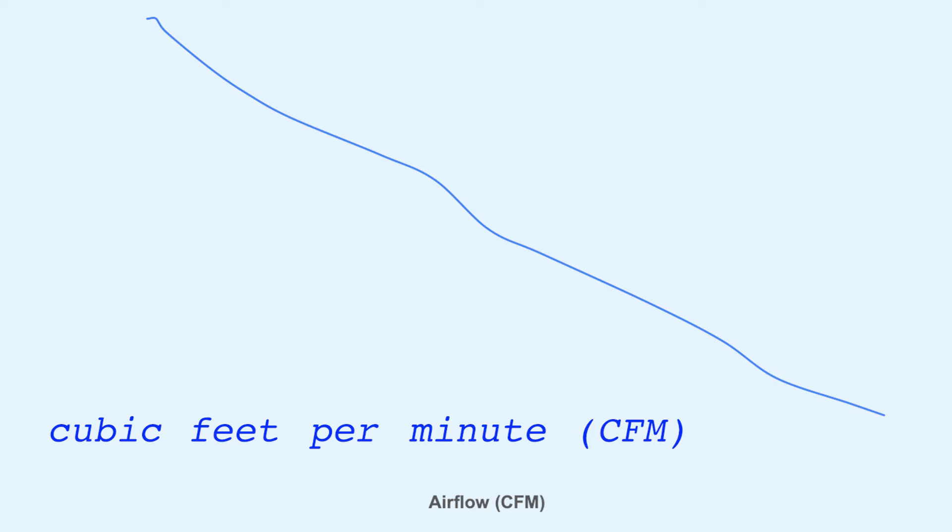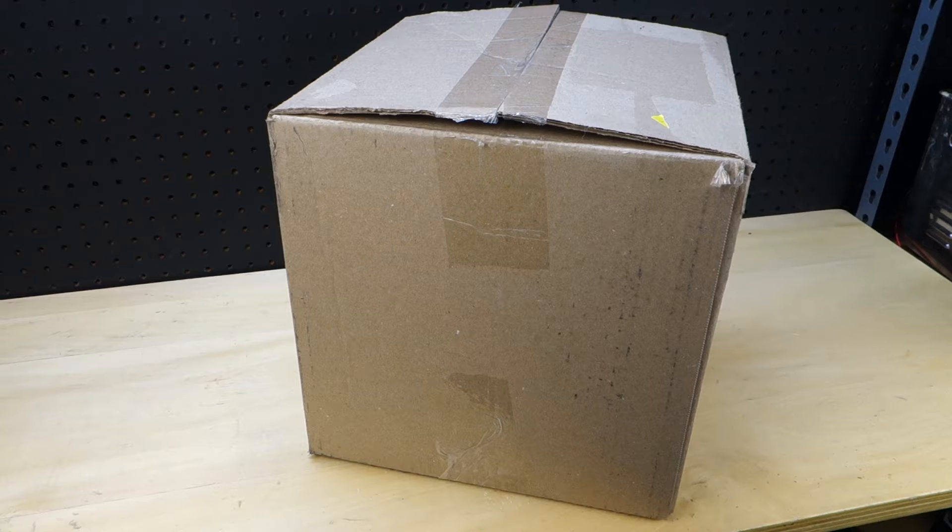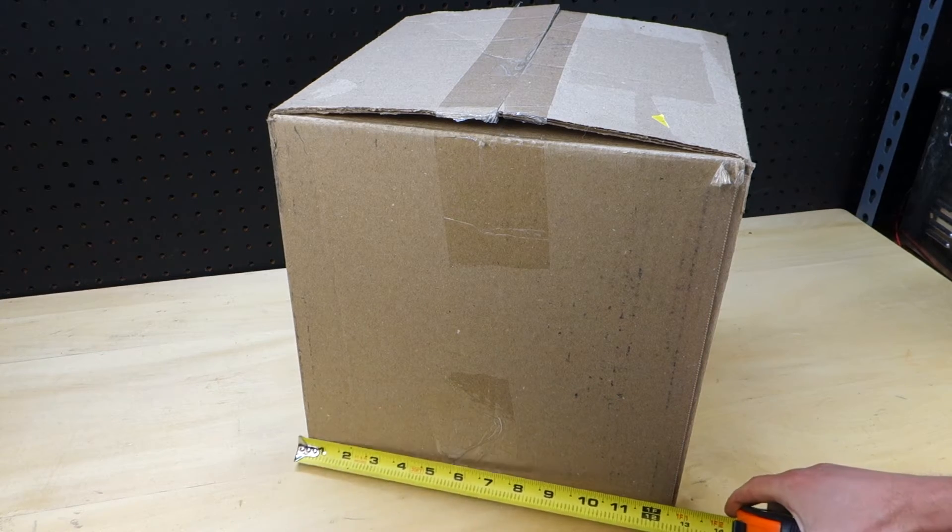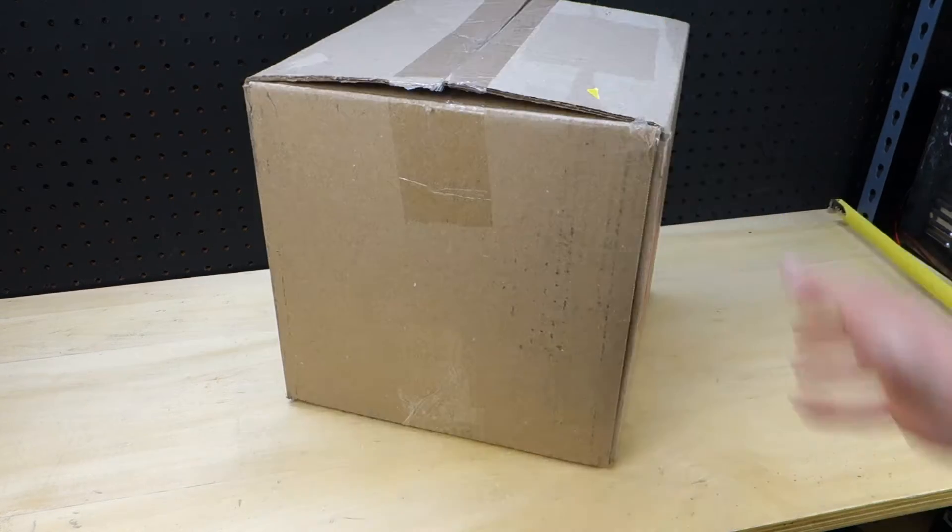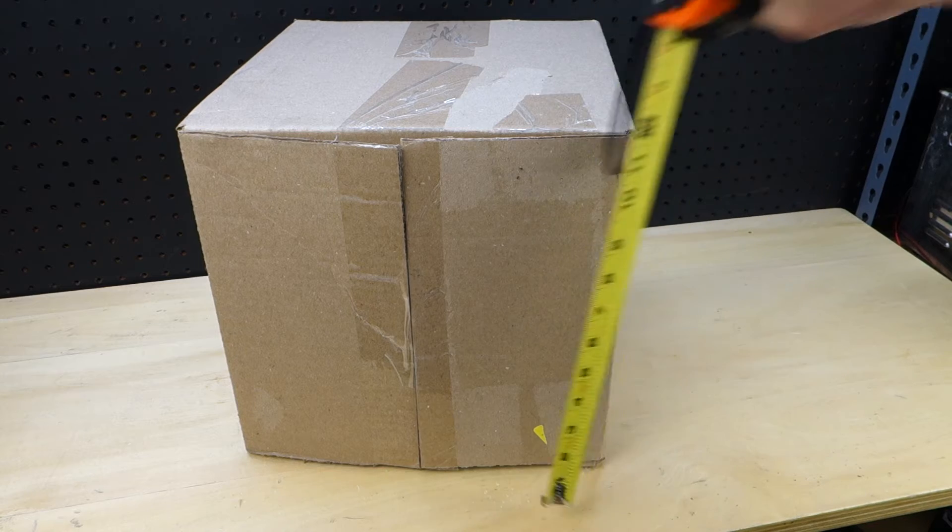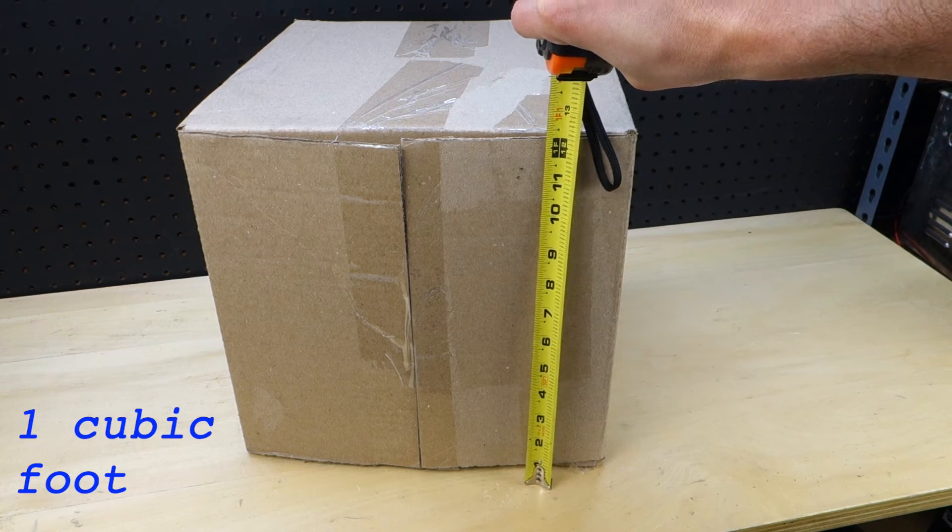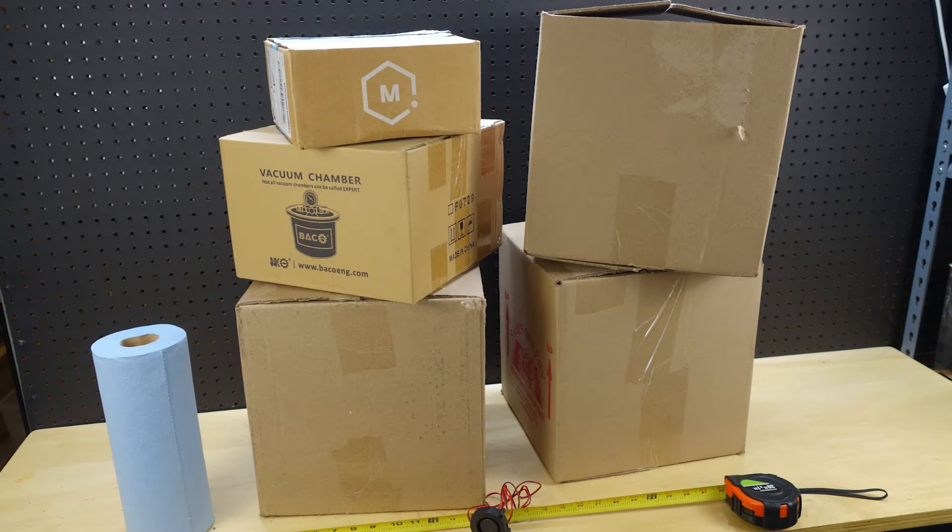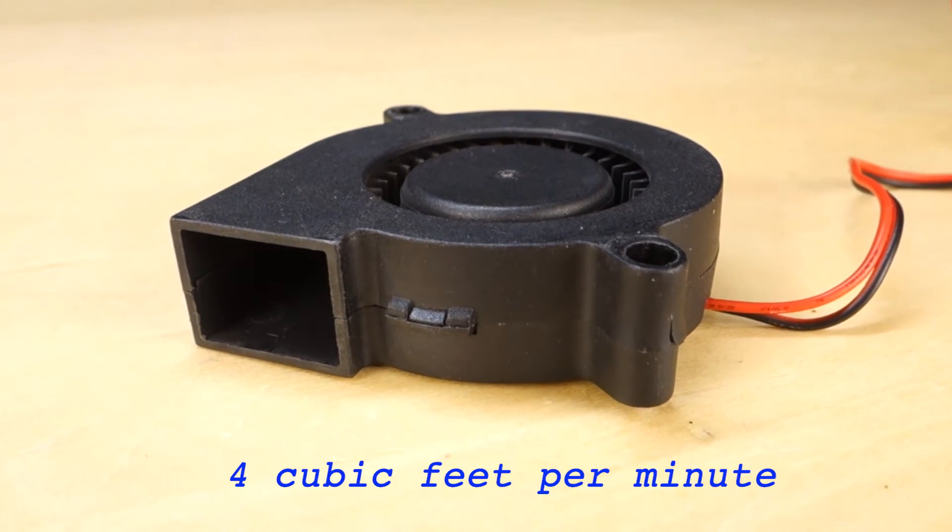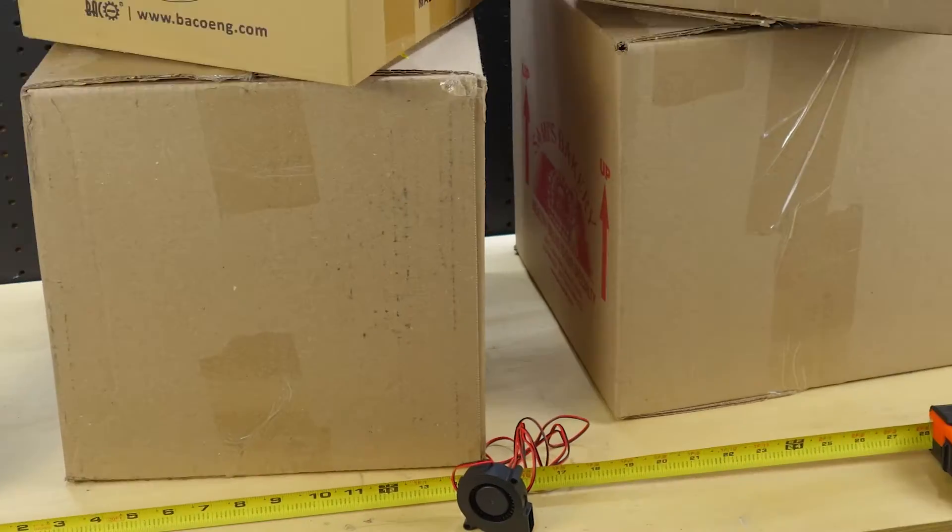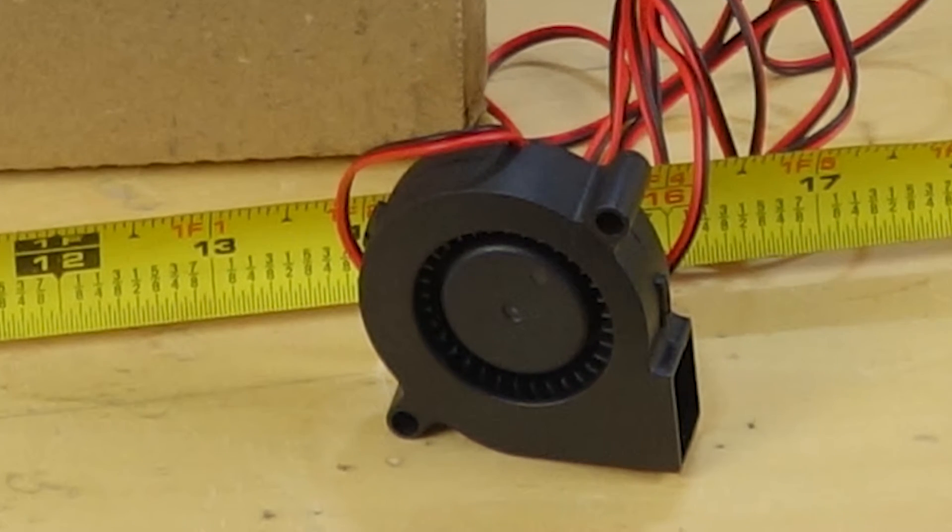But exactly how much is that? So look at this box on the table. If we measure it, it's 12 inches by 12 inches and then flip the box over by 12 inches. That's one cubic foot. Now let's add a few more boxes. And all of these boxes represent four cubic feet, which is the amount of air that this small blower fan can blow every single minute. That's a lot of air for one small fan.